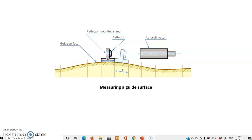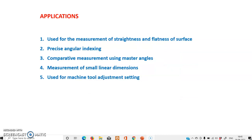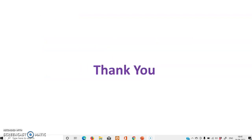Some setups are used for measuring a surface for its flatness — the instrument is moved a predetermined distance each time and the angular deflection is noted in the autocollimator. Other setups measure parallelism, and another setup measures the deflection of an elastic material. The primary applications of the autocollimator include measurement of straightness and flatness of surfaces, precise angular indexing and settings, comparative measurement using master angles, measurement of small linear dimensions, and machine tool adjustment settings.